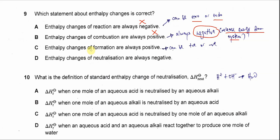Option C — enthalpy change of formation is always positive. For formation it depends on the elements and the products, so it's not always positive; it can be positive or negative. So this one is also wrong. Option D — enthalpy change of neutralization is always negative. Yes, neutralization always releases heat.